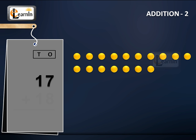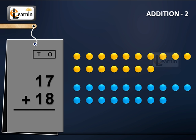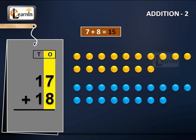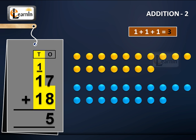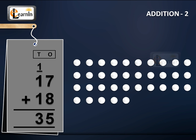17 plus 18. Adding the digits in the ones place, we have 7 plus 8 equals 15. Carrying the 1 to the tens place, we get 1 plus 1 plus 1 equals 3. Therefore, 17 plus 18 equals 35.